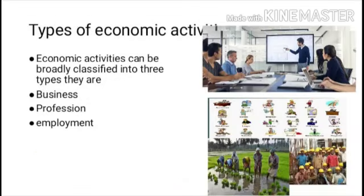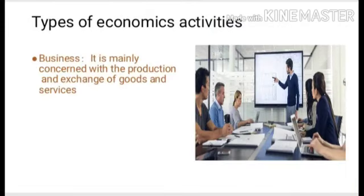We have understood what economic activities are. Now let us understand about the types of economic activities. The economic activities can be broadly classified into three types: business, profession and employment. Business is mainly concerned with production and exchange of goods and services. For example, where they produce a laptop, those laptops have to reach the consumers, and the consumer purchases those laptops and the money has to reach back to the producer. This is what is business.